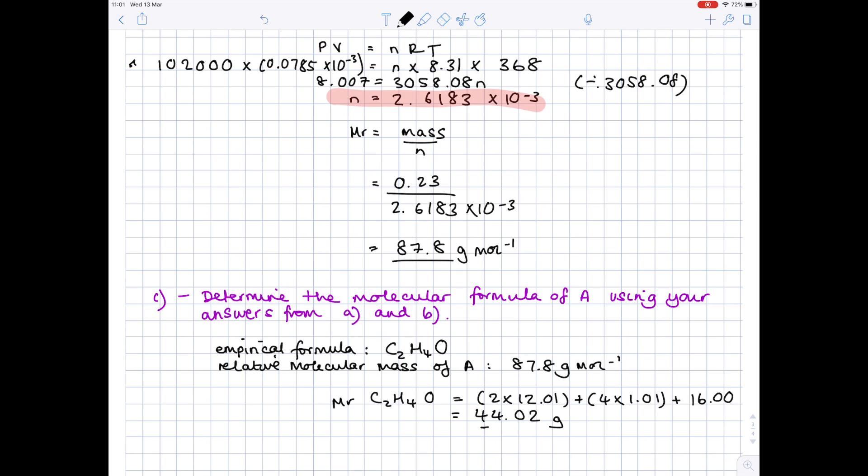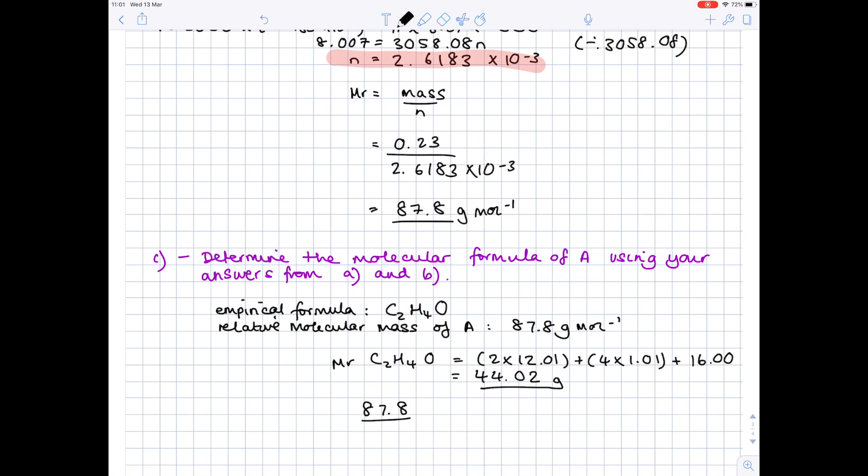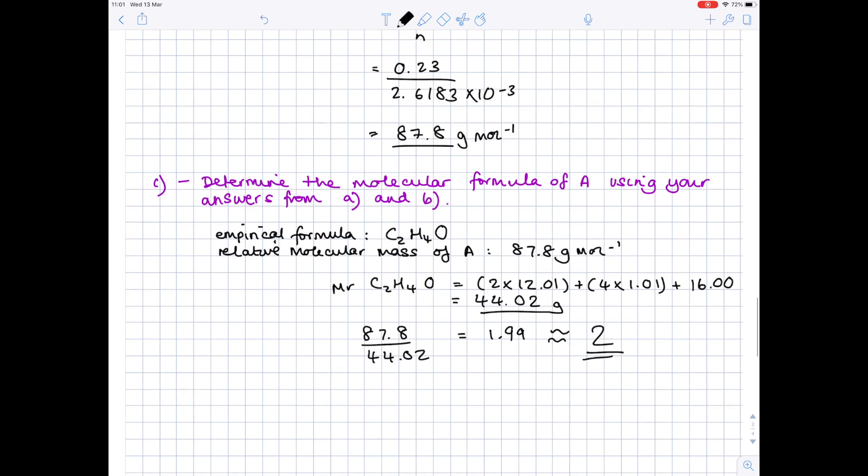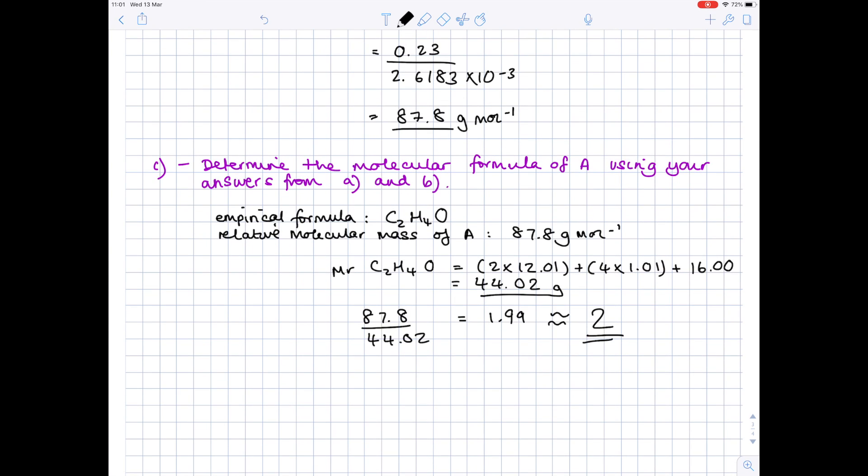These calculations are a little bit approximate. Then compare that with the mass you calculated in part B. So you need to do 87.8 divided by that number to get 1.99, which is approximately 2. So in order to determine your molecular formula, because you have twice as much mass compared with the empirical formula, you just need to multiply your empirical formula by 2. So it becomes C4H8O2.